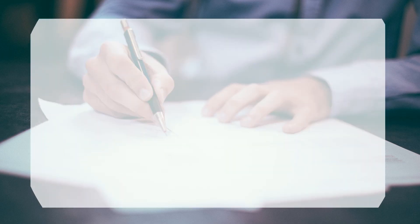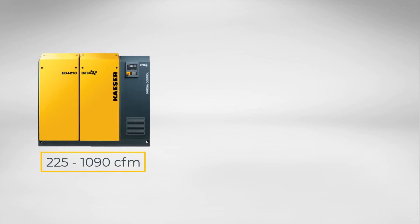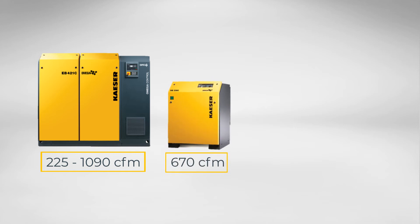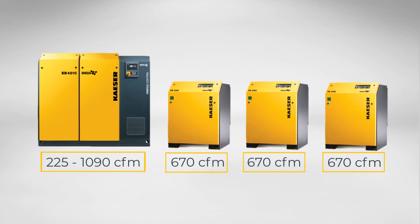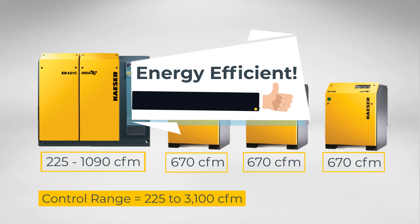Select units that have as flat a performance curve over varying speeds as possible. And to prevent control gap, size VFDs with a control range that exceeds the flow of the fixed speed blowers. While the VFD will likely run much of the time, the fixed speed machines should be the workhorses of the system, with the VFDs smoothing out the small variations in demand. Properly sized machines can be placed in a short idle or standby state for rapid response to varying demands. A machine in idle will use far less energy than a loaded machine venting unneeded air, and will use no energy when turned off.